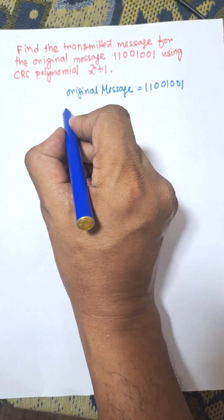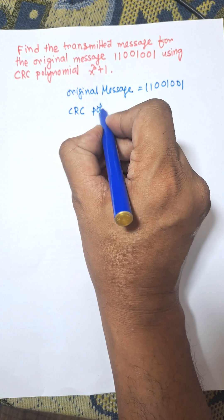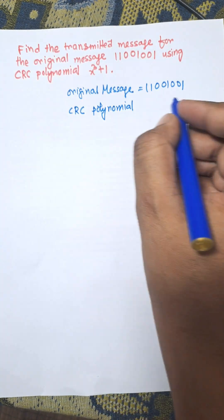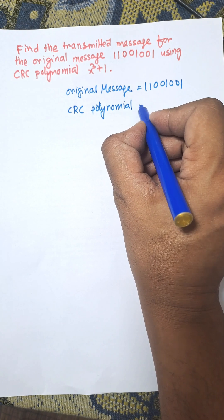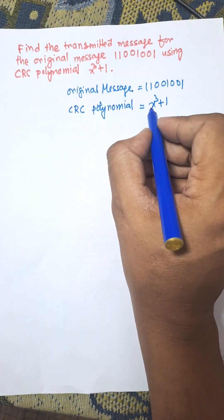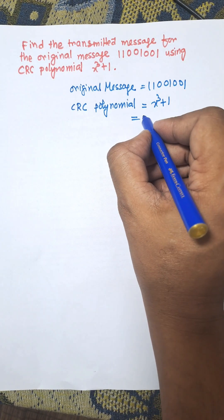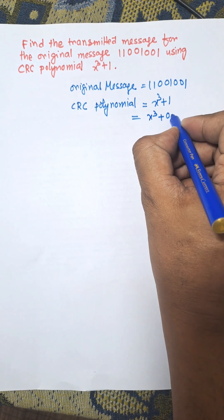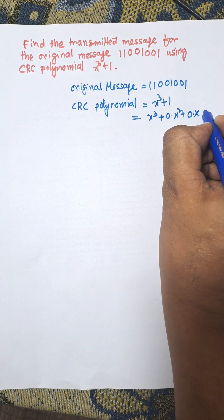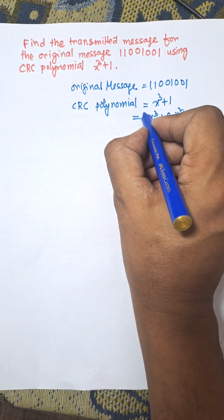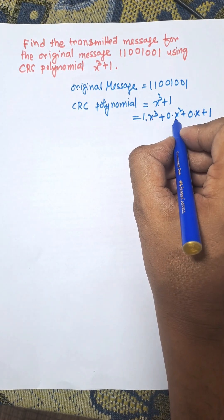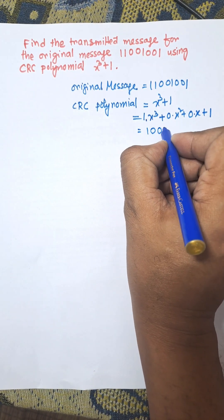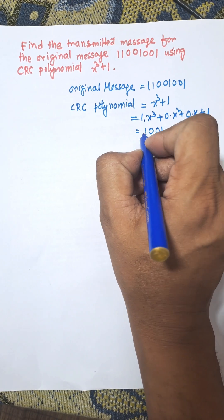Now the CRC polynomial is used to find the divisor that is shared by sender and receiver. Here the CRC polynomial will be x³ + 1, which expands to 1·x³ + 0·x² + 0·x + 1, that is equal to 1001. So this is known as the divisor.